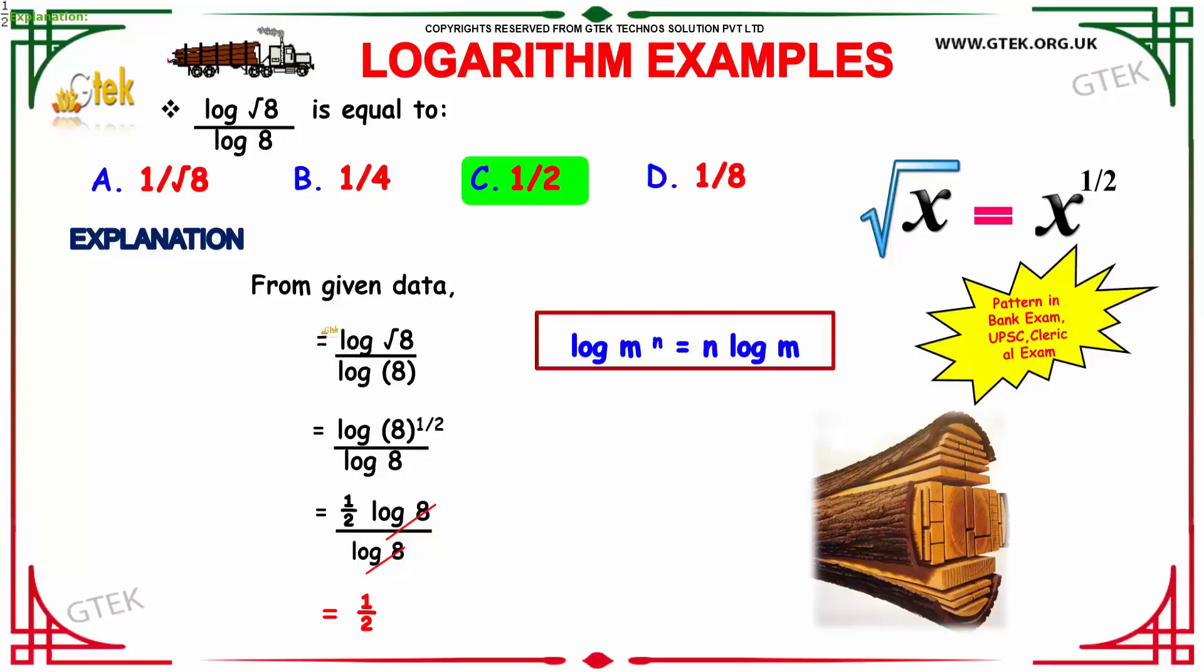Log(√8) by log 8 can be written as log(8^(1/2)) by log 8. As we already know, √8 can be written as 8 power half. Using the property log(m^n) equals n log m, we can write 8 power half as half into log 8 by 8.